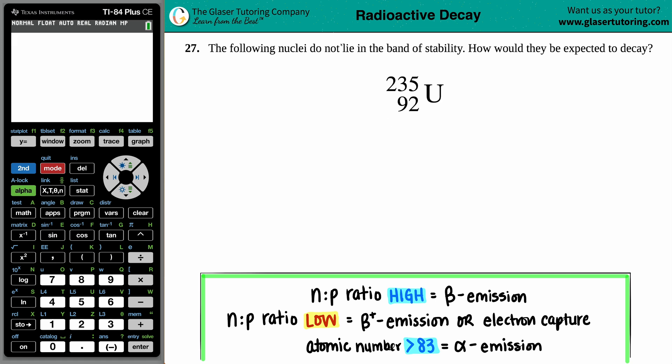Number 27: The following nuclei do not lie in the band of stability. How would they be expected to decay?